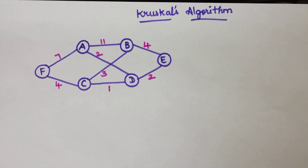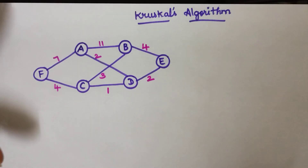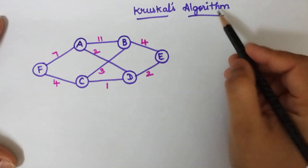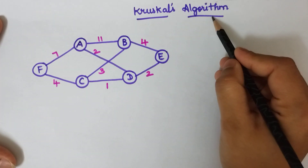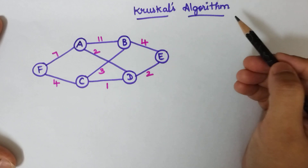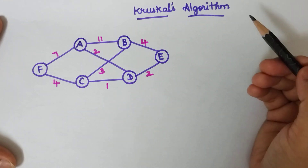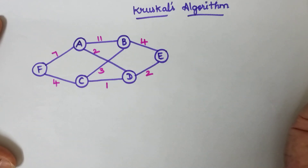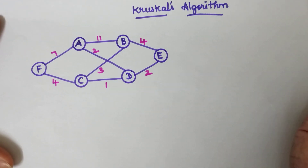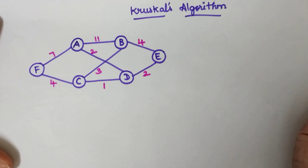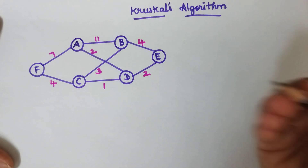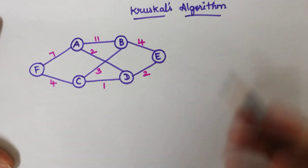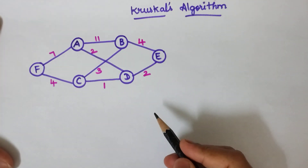Hello all, welcome back. Here we are going to discuss Kruskal's algorithm. So what is the use of Kruskal's algorithm? It is used to find the minimum spanning tree. We already discussed what is a spanning tree and what is a minimum spanning tree in our previous video, so if you didn't check it out, just go back and check that video first and then come to this problem.